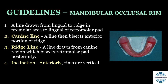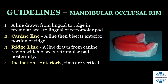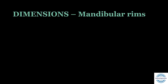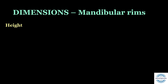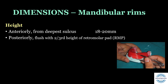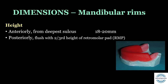Anteriorly, the mandibular rims should be inclined as vertical as the lower incisors, which are vertical on the ridge; posteriorly, the rims should incline towards the ridge crest. The rims should also follow the arch form. For mandibular rim dimensions: the height anteriorly from the deepest sulcus should be 18 to 20 millimeters; posteriorly it should flush with the anterior two-thirds height of the retromolar pad, dividing it into three equal parts.